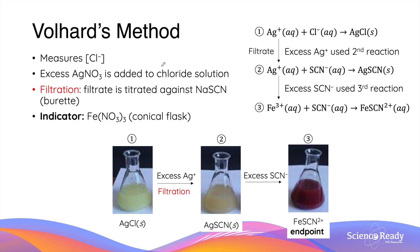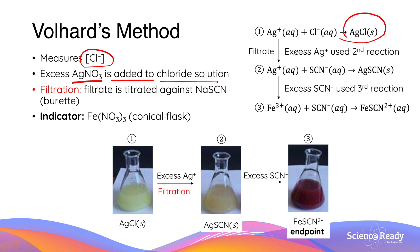The next method we'll discuss is Vohar's method. Like Mohr's method, Vohar's method also aims to measure the concentration of chloride ions in a given solution by producing precipitates. First, excess silver nitrate is added to the chloride solution to produce silver chloride, which is the white precipitate shown in the first picture.